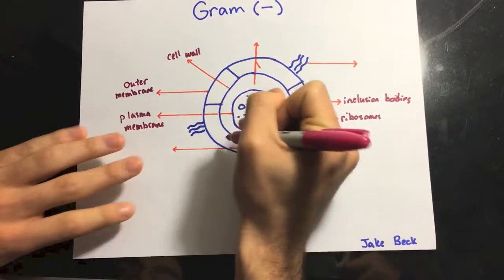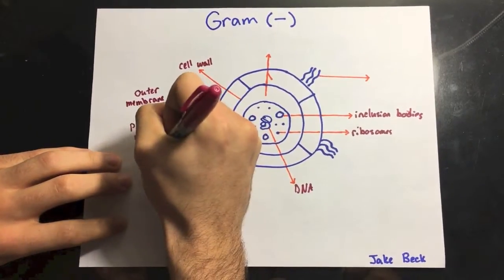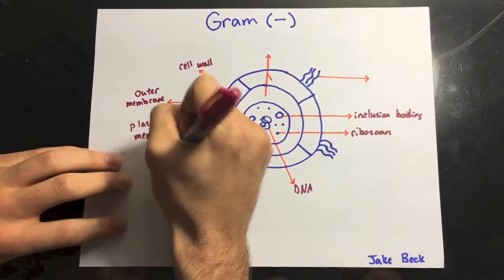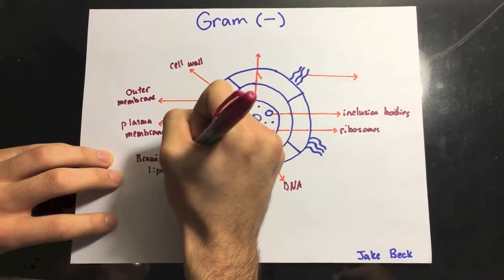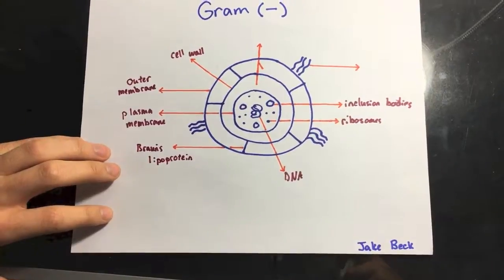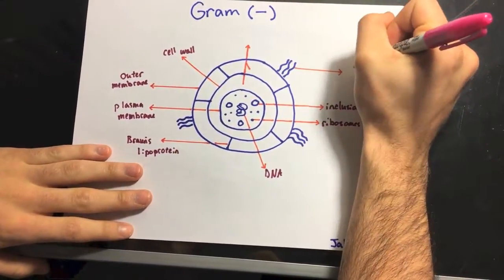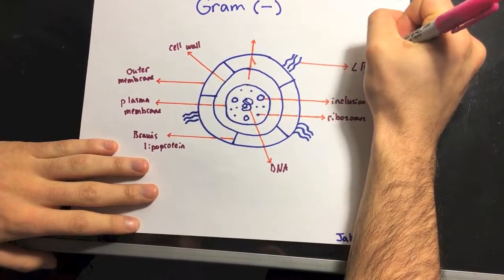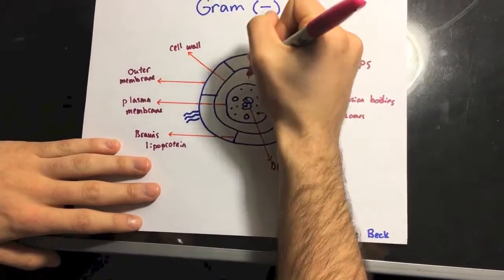This is the Braun's lipoprotein. And then make sure you include the lipopolysaccharide, or LPS, and the periplasmic space again.